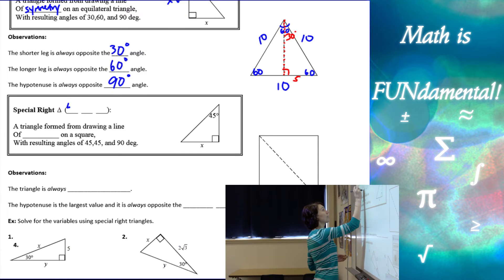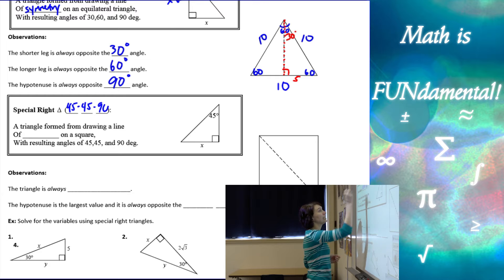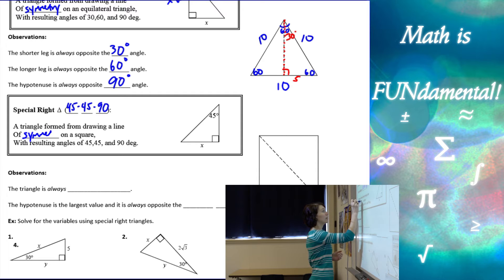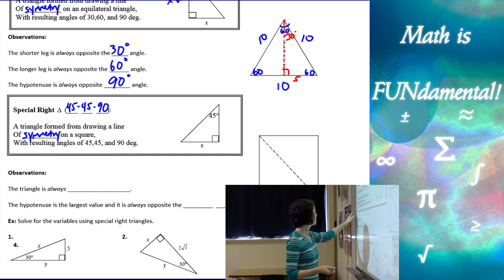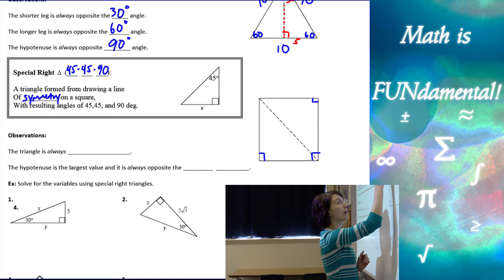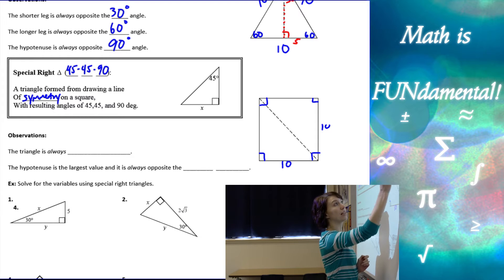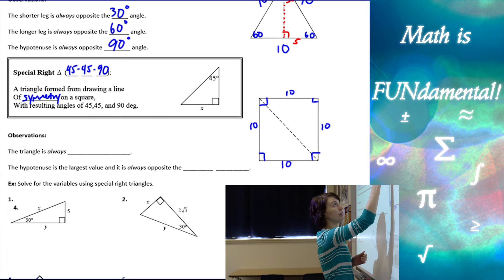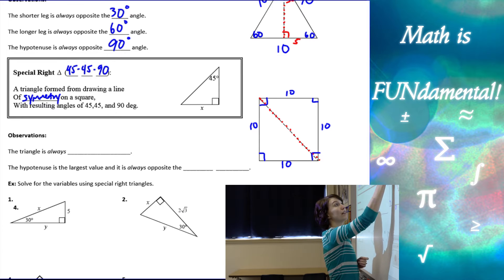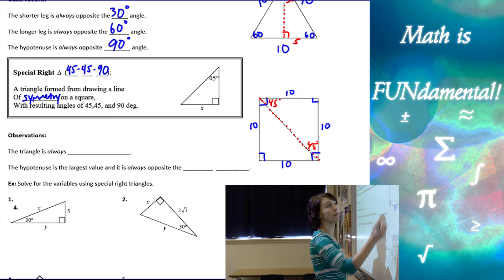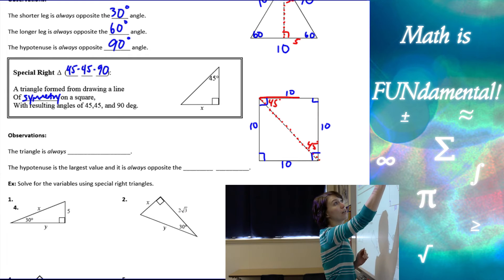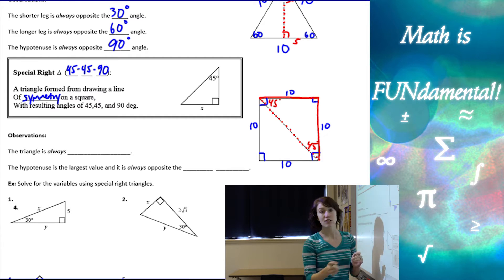The next special right triangle is our 45-45-90 triangle. It's formed by drawing a line of symmetry on a square. All four angles are 90 degrees and all sides are the same length — let's use 10 again. If I split through those angles as my line of symmetry, I've split these angles in half, creating 45 and 45. But the two legs are still 10.